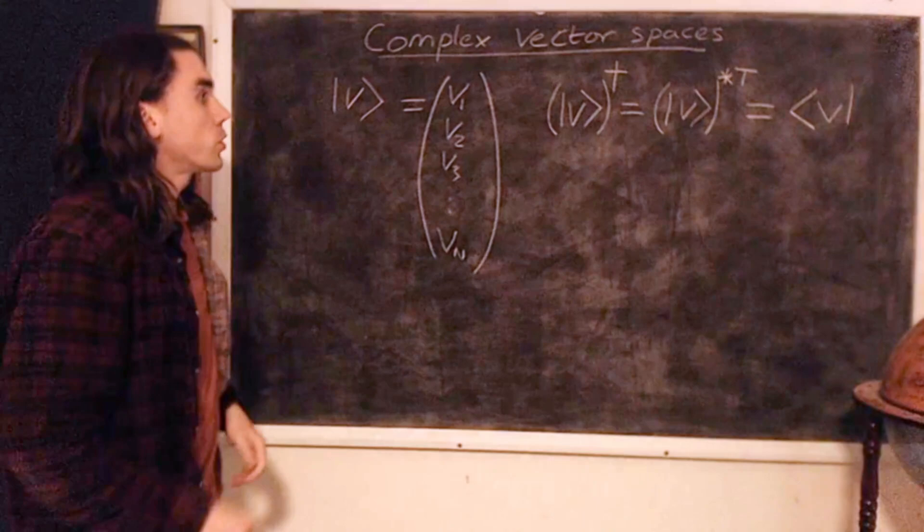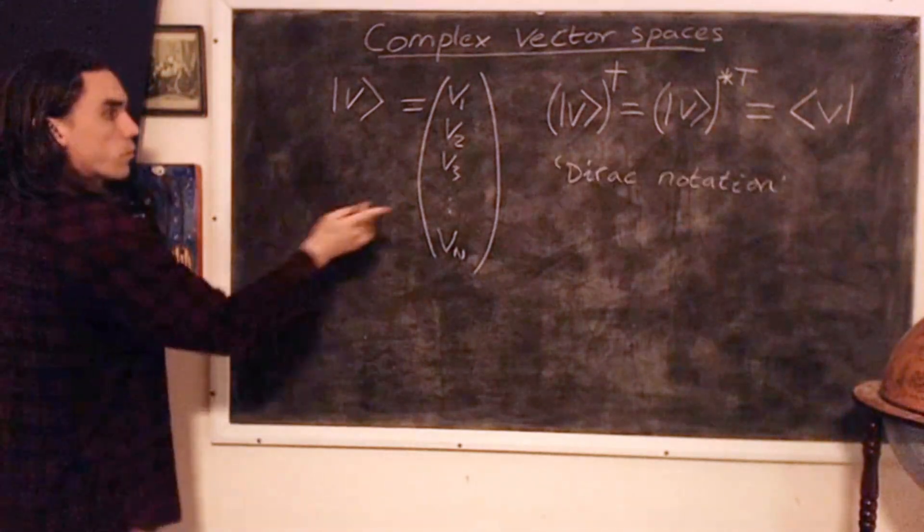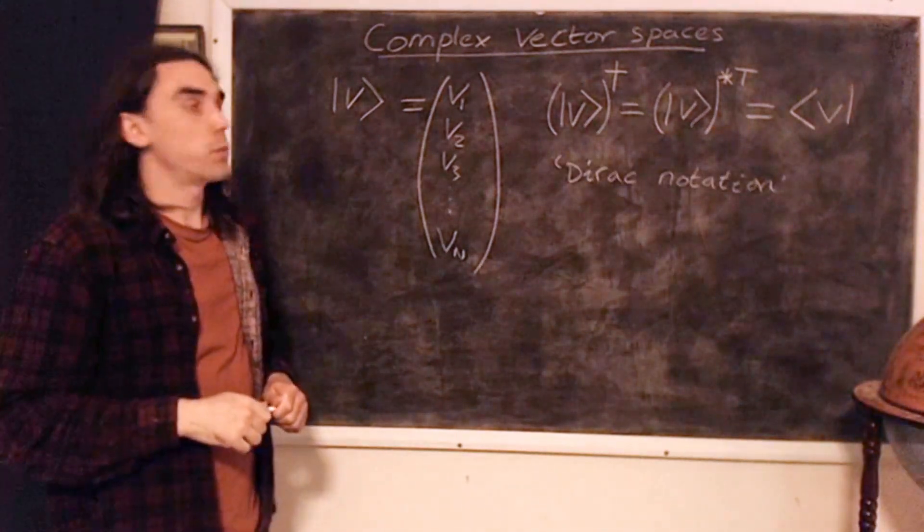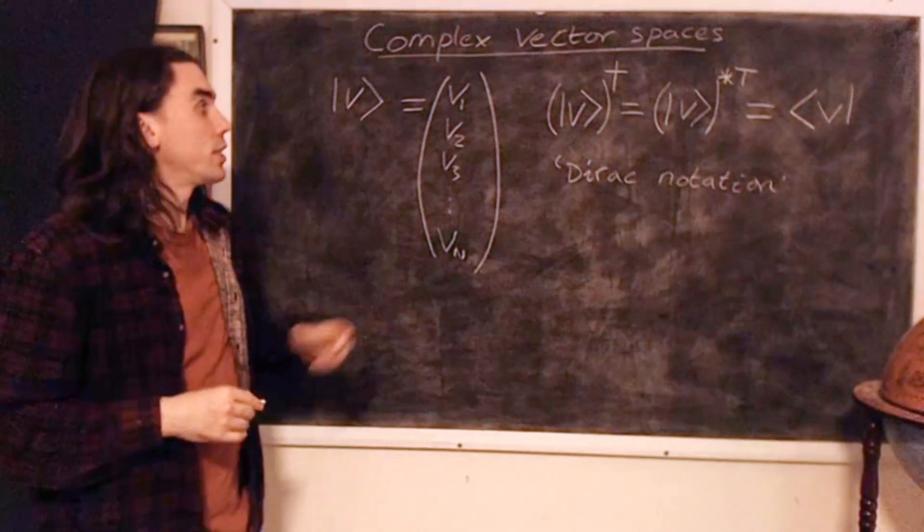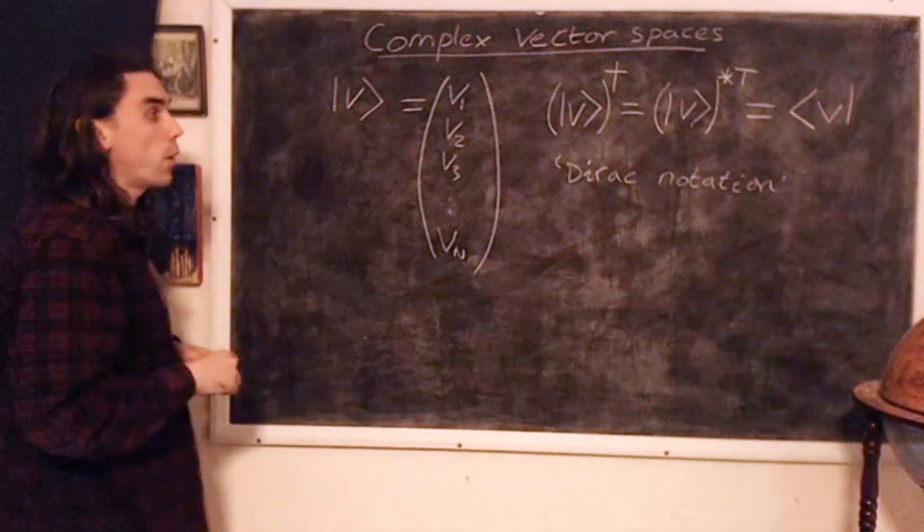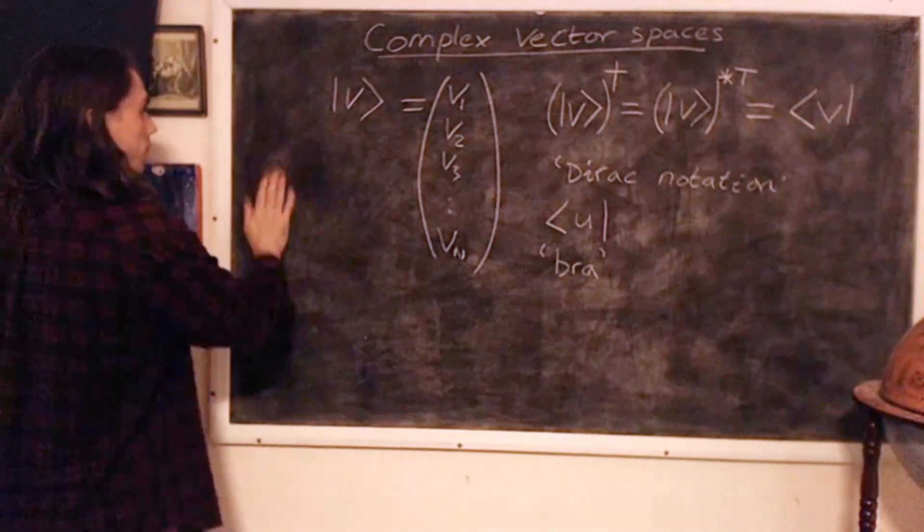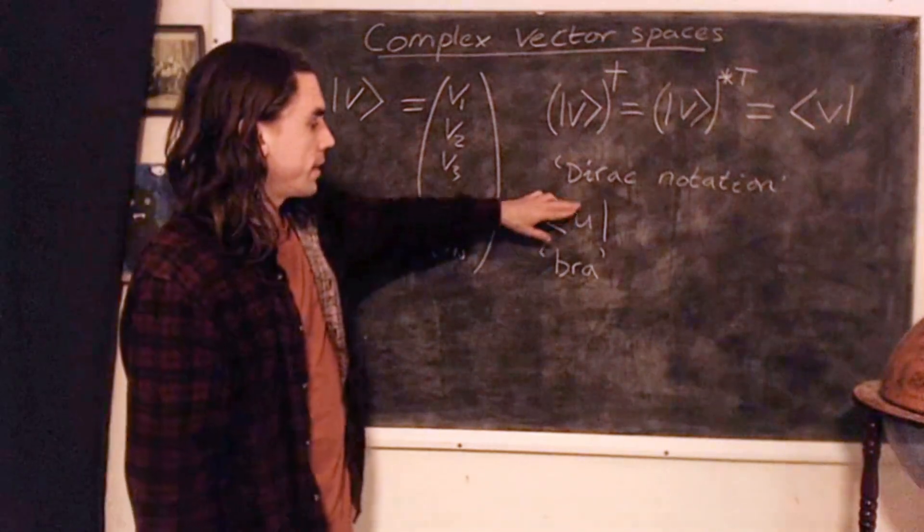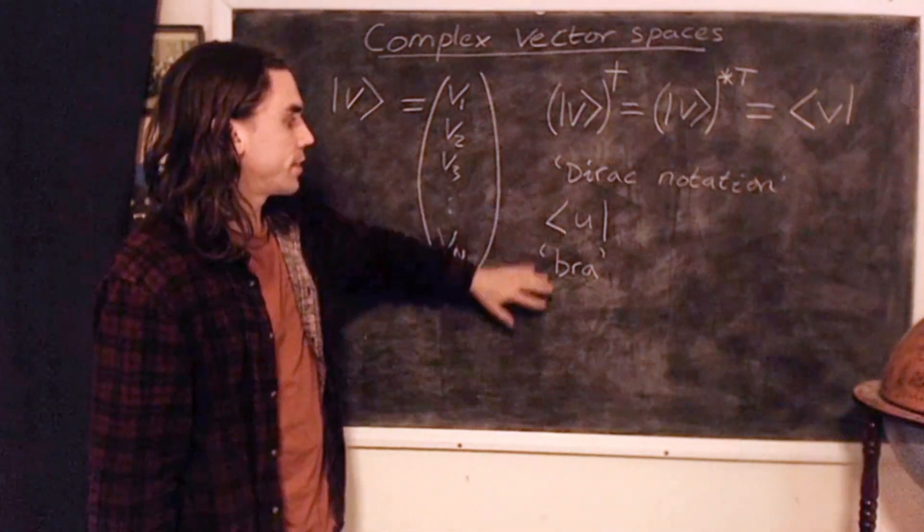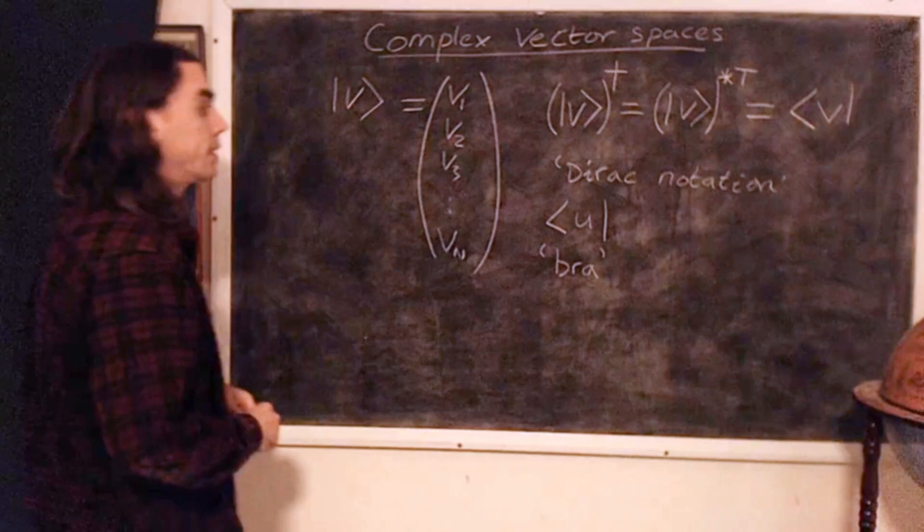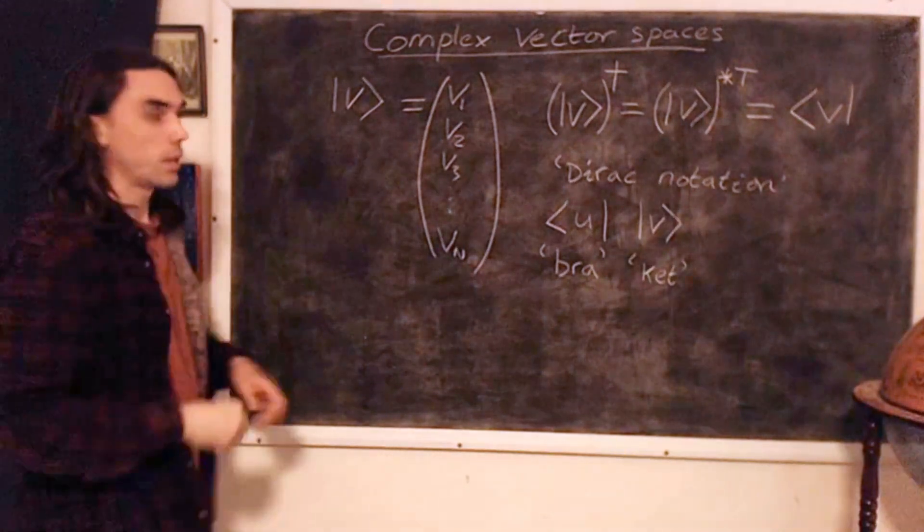So it's called Dirac notation. Dirac himself referred to it as bra-ket notation, which is also sometimes used, where we define the following quantities. The Hermitian conjugate of the vector is defined to be a bra, and the vector itself, a ket.